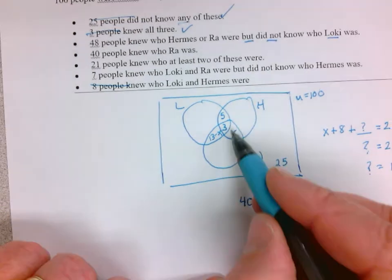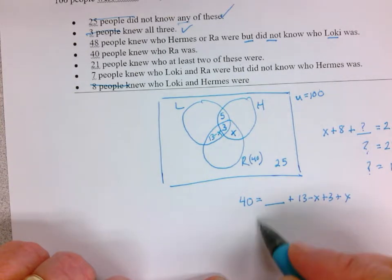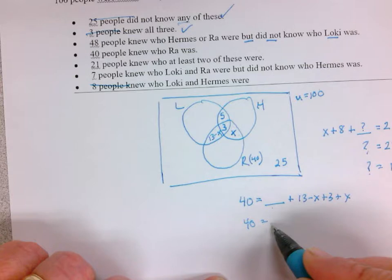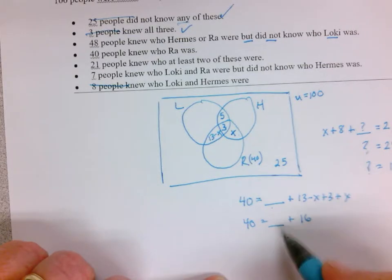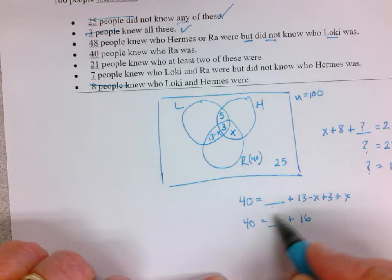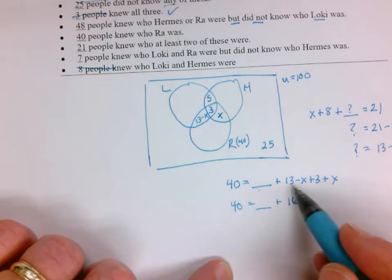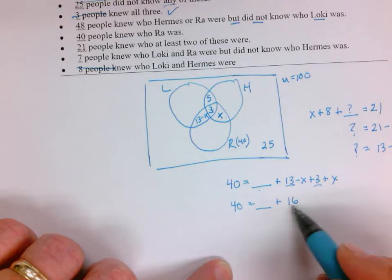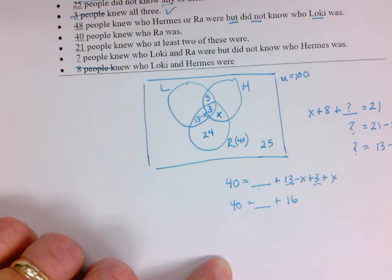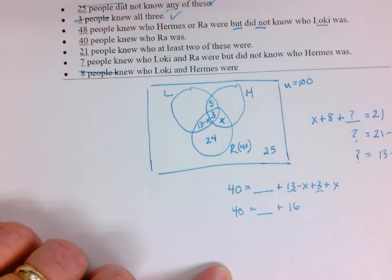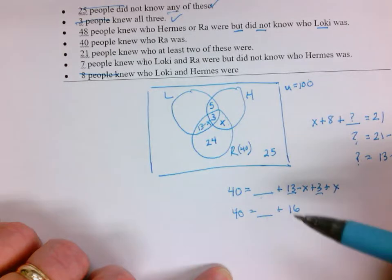In other words, those four spaces add up to 40. We just don't know what this one is. But 13, that's 16, and X and X goes away. So our blank space here, we can solve. That space is 24. Now we're getting somewhere.